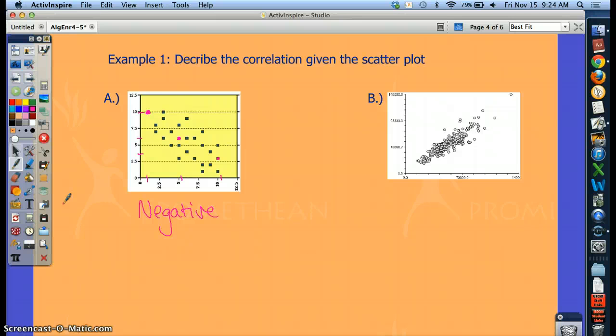For B, what kind of correlation do you see here? Look at the graph. Rate it from left to right. We are increasing. As x increases, so does y. So this is a positive correlation. You might say this is a strong positive correlation because there's a lot of points clustered together.